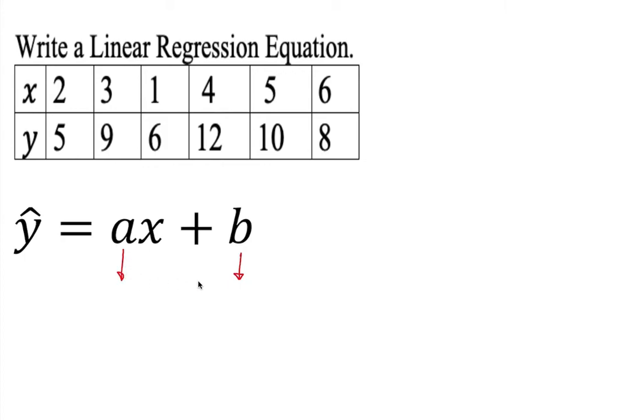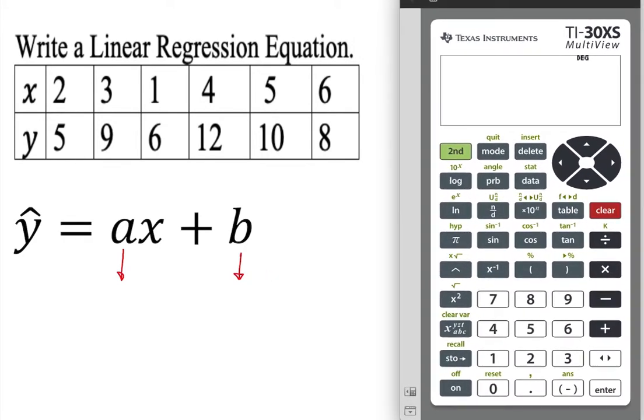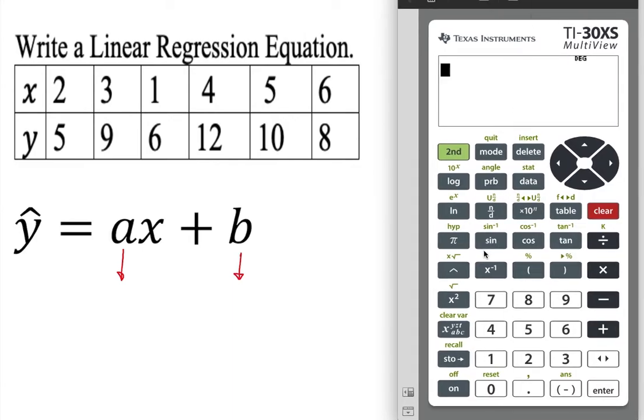We can do it the long way by using the least square criteria or we can use our TI-30XS MultiView calculator. That will work nice. So all we need is a and b, but how do you do that?